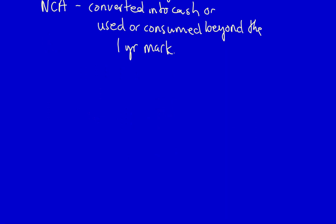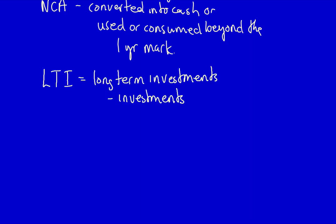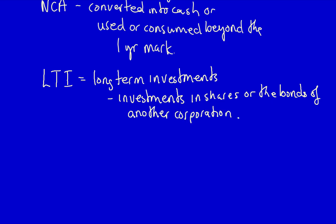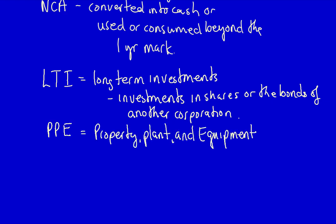I'll cover non-current asset subcategories in the order they appear on financial statements. First is long-term investments — investments in the shares or bonds of another corporation that generate revenue through interest income or capital gains. They're listed first because they will be converted into cash. Next is property, plant and equipment, also called fixed assets or capital assets. These are long-lived physical assets that help generate revenue, such as land, building, furniture and fixtures, or computers.